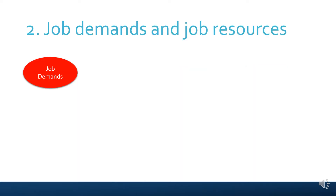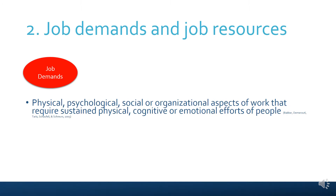The model starts off with defining job demands and job resources. Job demands are all physical, psychological, social or organizational aspects of work that require sustained physical, cognitive or emotional efforts of people. These could reside at various different levels. For example, at the task level, job demands might include interruptions — being disturbed while working concentratedly on a particular task — or technostress, such as when you're a host needing to give people badges but something goes wrong with the technology to scan their passports.